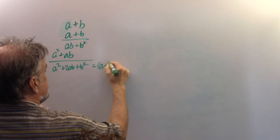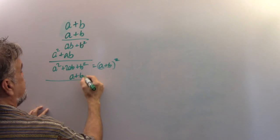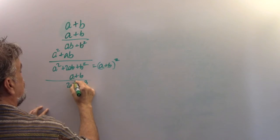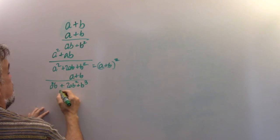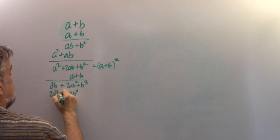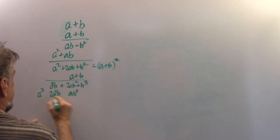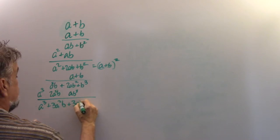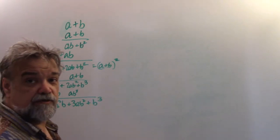Now let's multiply again: (a + b) squared times (a + b). We get b-cubed, 2ab-squared, a-squared·b, ab-squared, 2a-squared·b, and a-cubed. Adding those up gives a-cubed plus 3a-squared·b plus 3ab-squared plus b-cubed.